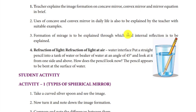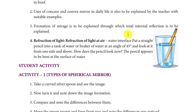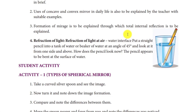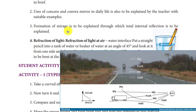Then the mirror equation: 1/f = 1/u + 1/v, where f is the focal length, u is the object distance, and v is the image distance. Using this formula, we can calculate the focal length and other quantities.